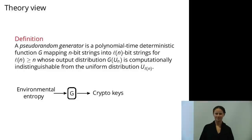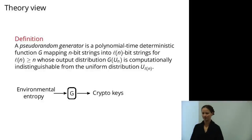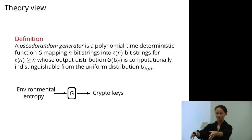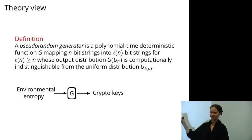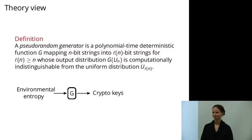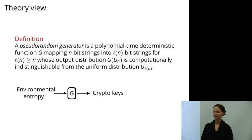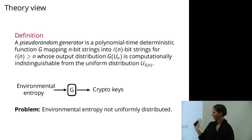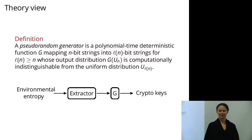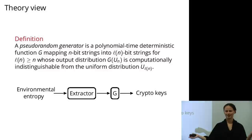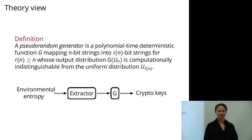The picture you might have is that in order to generate long strings of pseudorandom values in practice, we can take some environmental entropy, feed it into our pseudorandom generator algorithm, and get out some value which we can then use to generate cryptographic keys. That's the nice picture — that's what we want. One problem is that this definition requires uniform inputs, and the environment might not provide uniform inputs. But theory has the answer: we can just use an extractor. We feed our entropy into an extractor, it gives us a uniform input, we feed that into our pseudorandom generator, and we get out some crypto output.